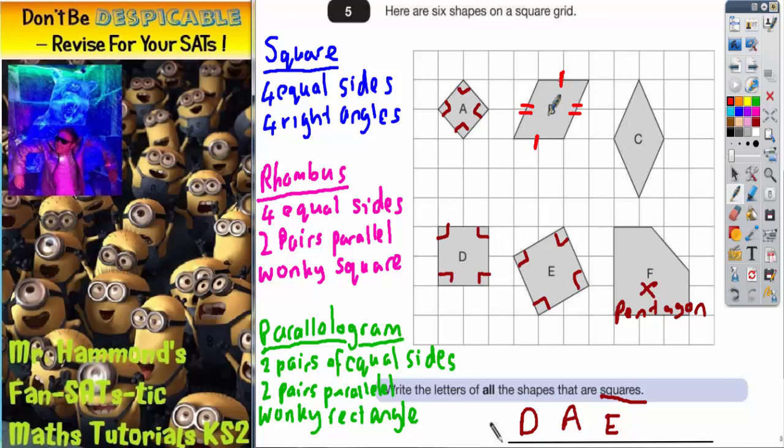So we've got a pair of shorter sides, top and bottom, and a pair of longer sides, left and right. So what we've actually got is two pairs of equal sides. We've also got two pairs of parallel sides. Top and bottom are parallel. Left and right are parallel. So we've actually got a wonky rectangle. So a wonky rectangle is a parallelogram. So shape B is a parallelogram.